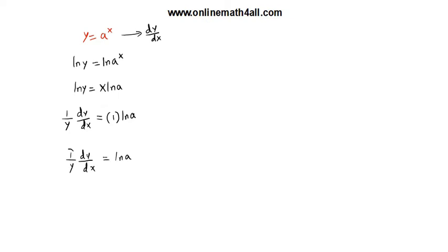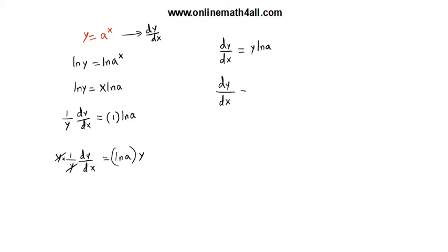My aim is to get only dy over dx, so I have to get rid of this 1 over y. I need to multiply both sides by y. The y here and here will cancel, and we get dy over dx is equal to y times ln a. We already know that y is equal to a to the power x, so we can replace y by a to the power x. Finally, we get dy over dx is equal to a to the power x times ln a.